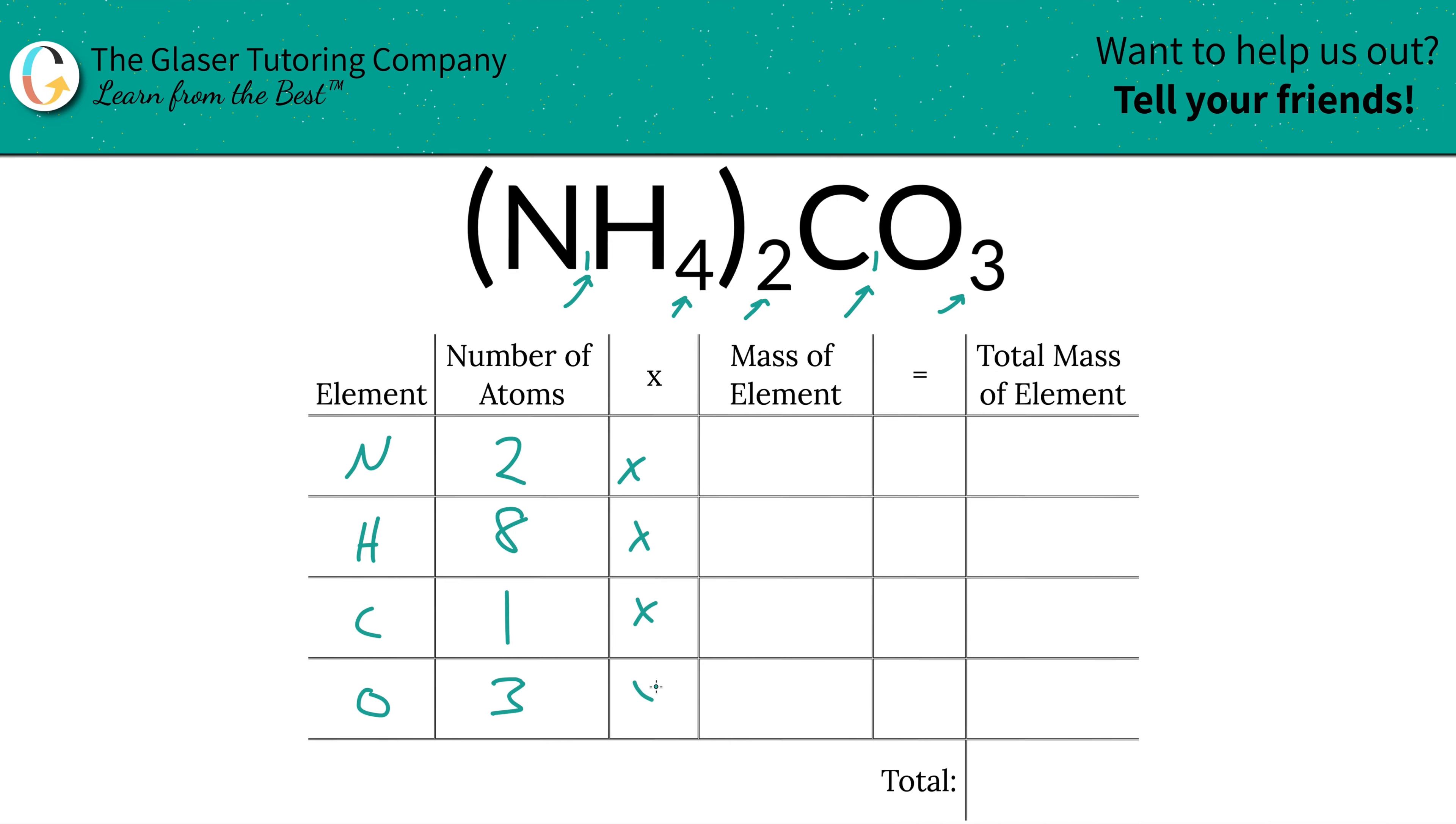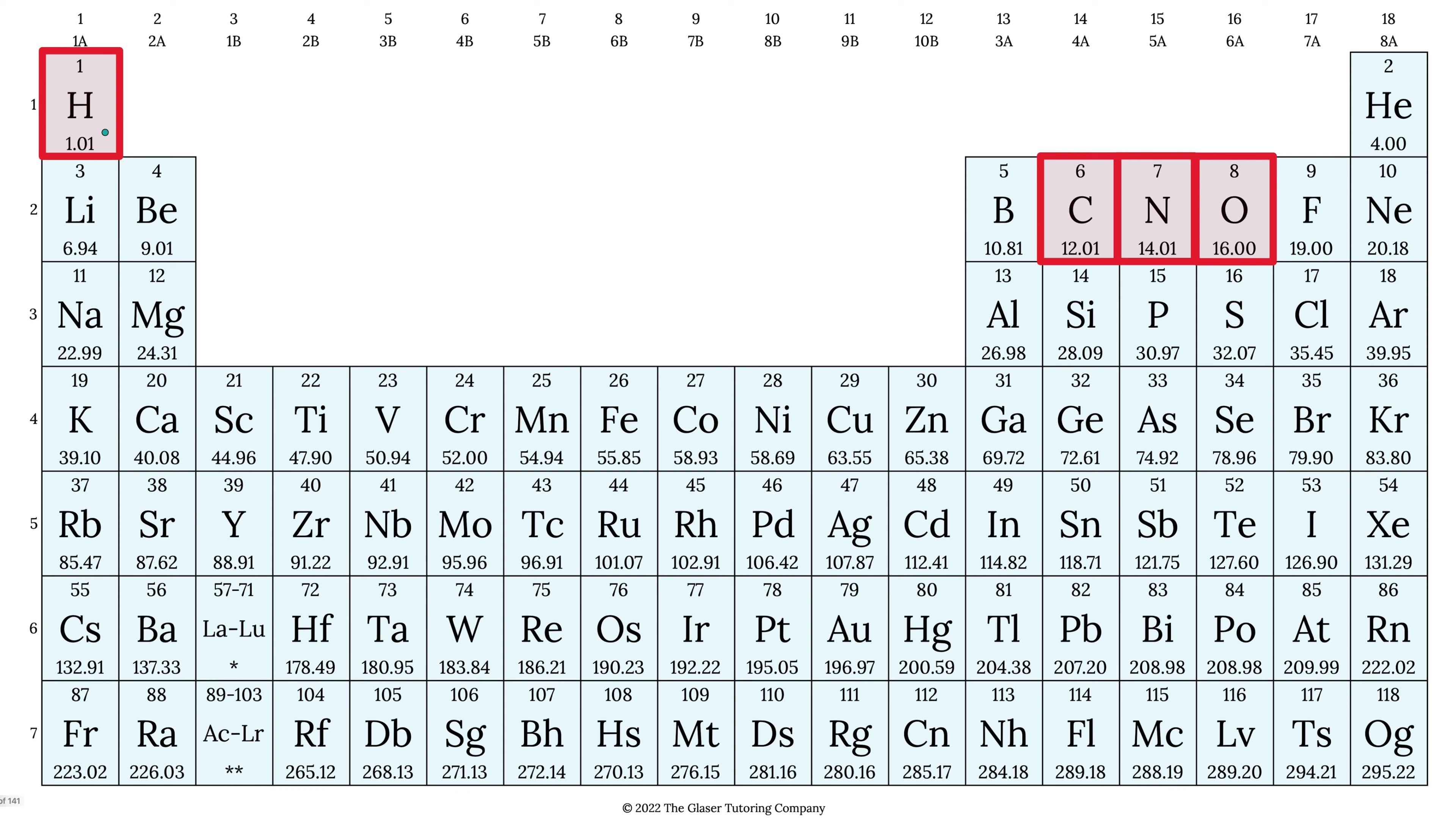Then we're simply going to take those number of atoms and multiply it by the mass of each element. That's where the periodic table comes into play. So hydrogen's mass is 1.01, carbon is 12.01, nitrogen is 14.01, and oxygen is 16.